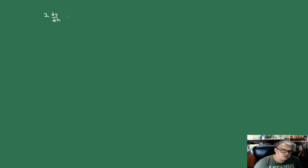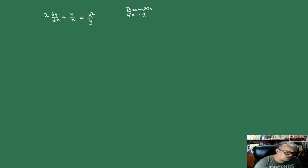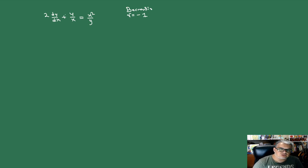Primer ejemplo: 2(dy/dx) + y/x = x²/y. Esta es una ecuación de Bernoulli con r igual a menos 1. Los coeficientes son: a0 es constante (igual a 2), a1 es 1/x, y f(x) es x².